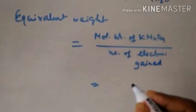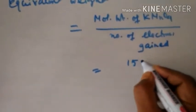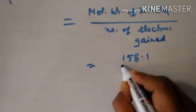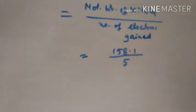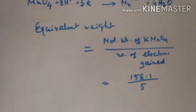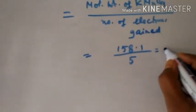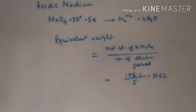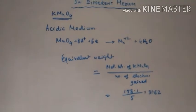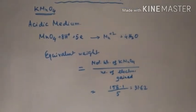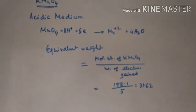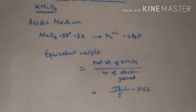The molecular weight of KMnO4 is 158.1, and the number of electrons gained is 5. So calculating this value, we get 158.1 divided by 5 equals 31.62. This is the equivalent weight of KMnO4 in acidic medium.